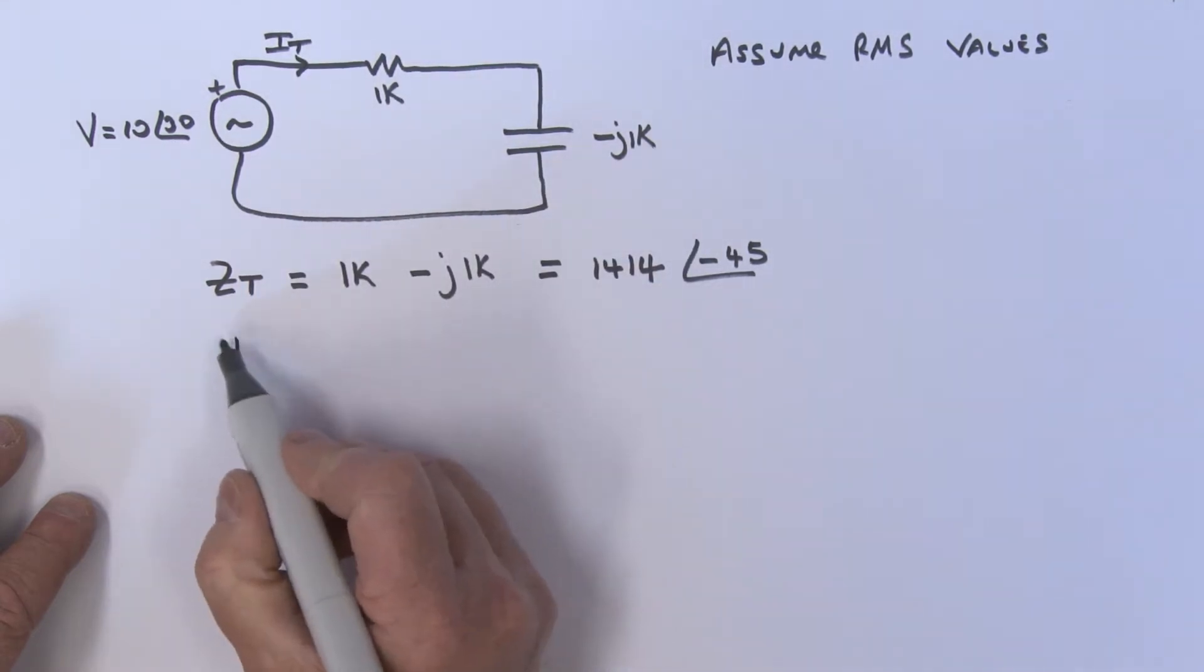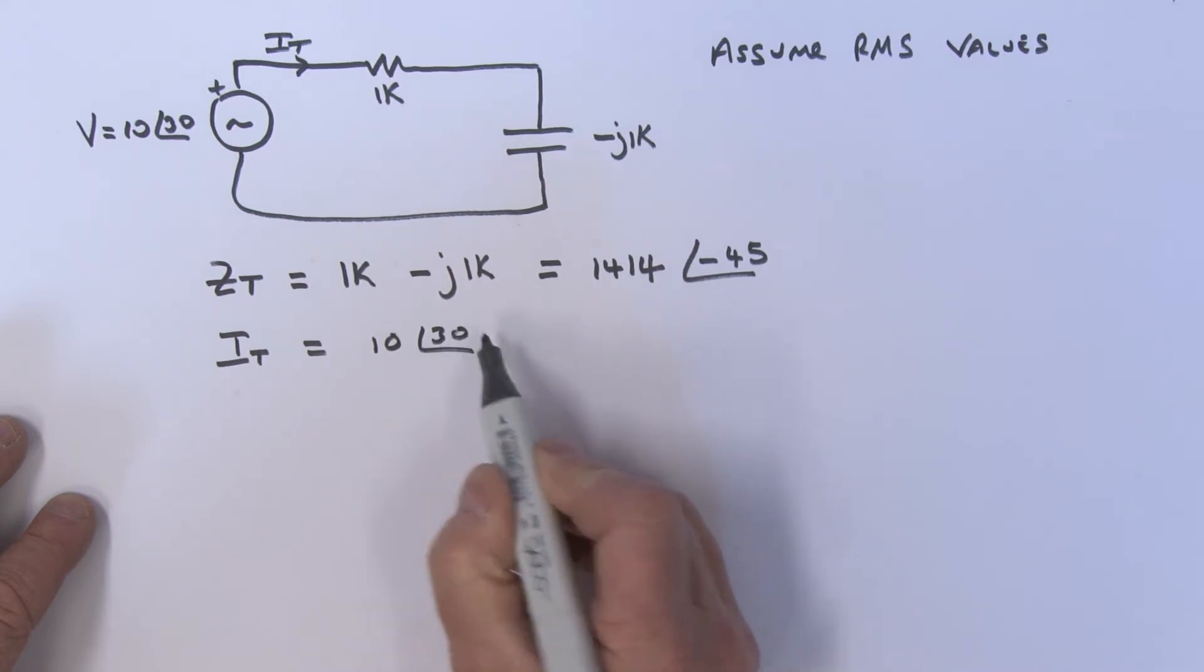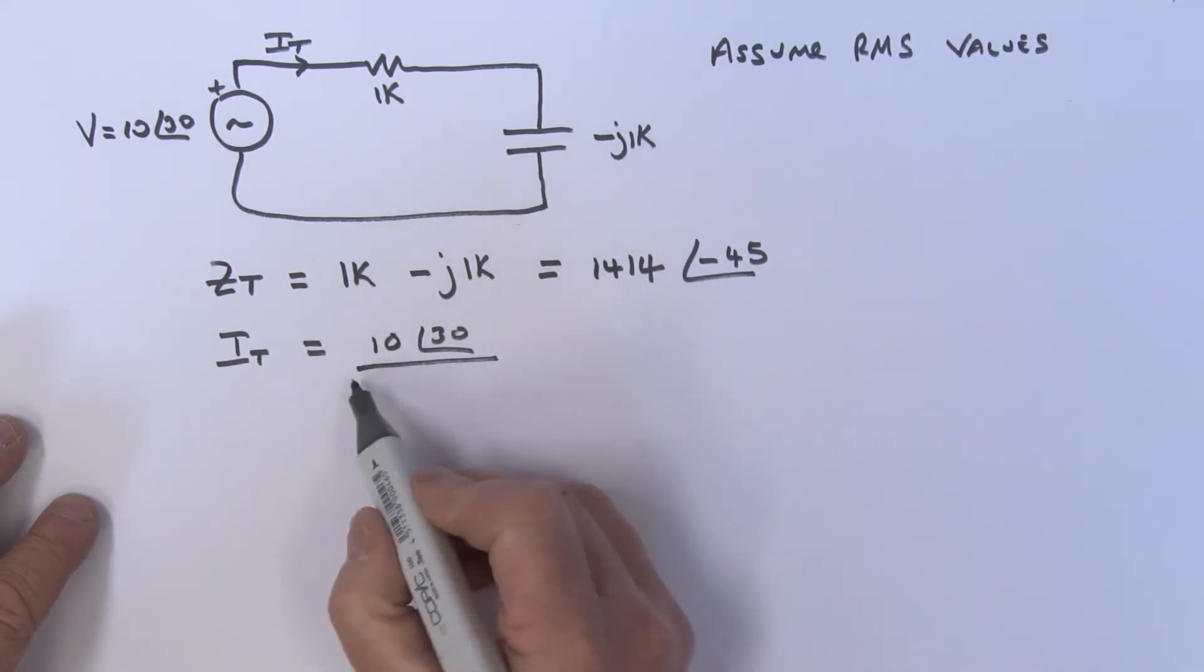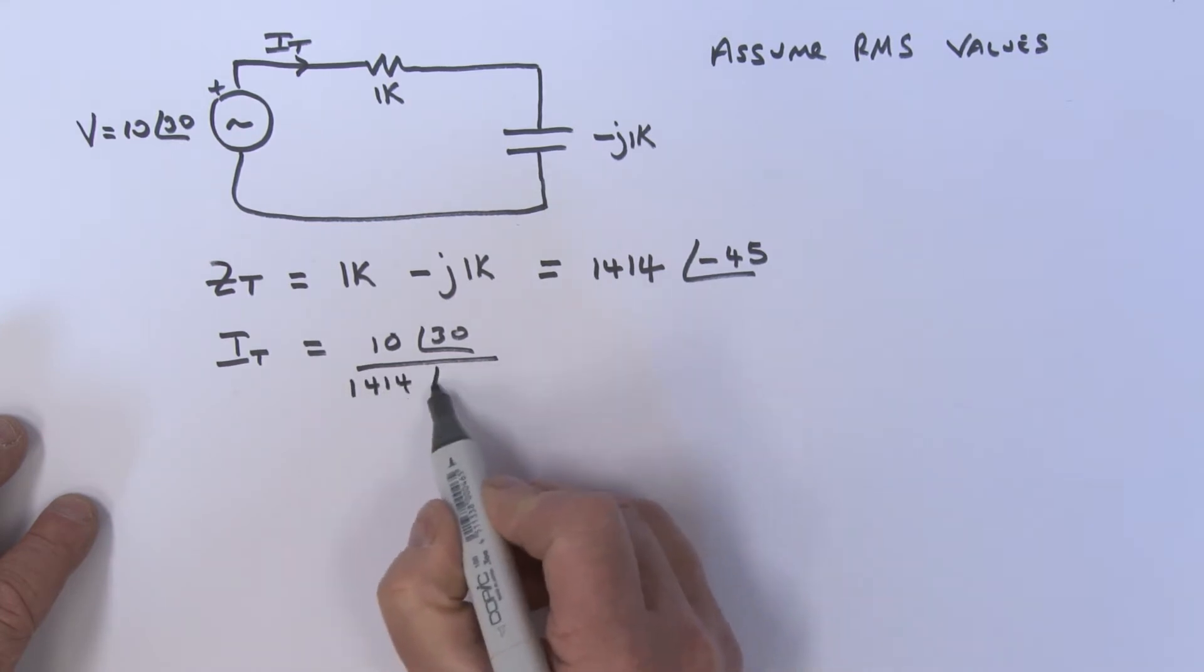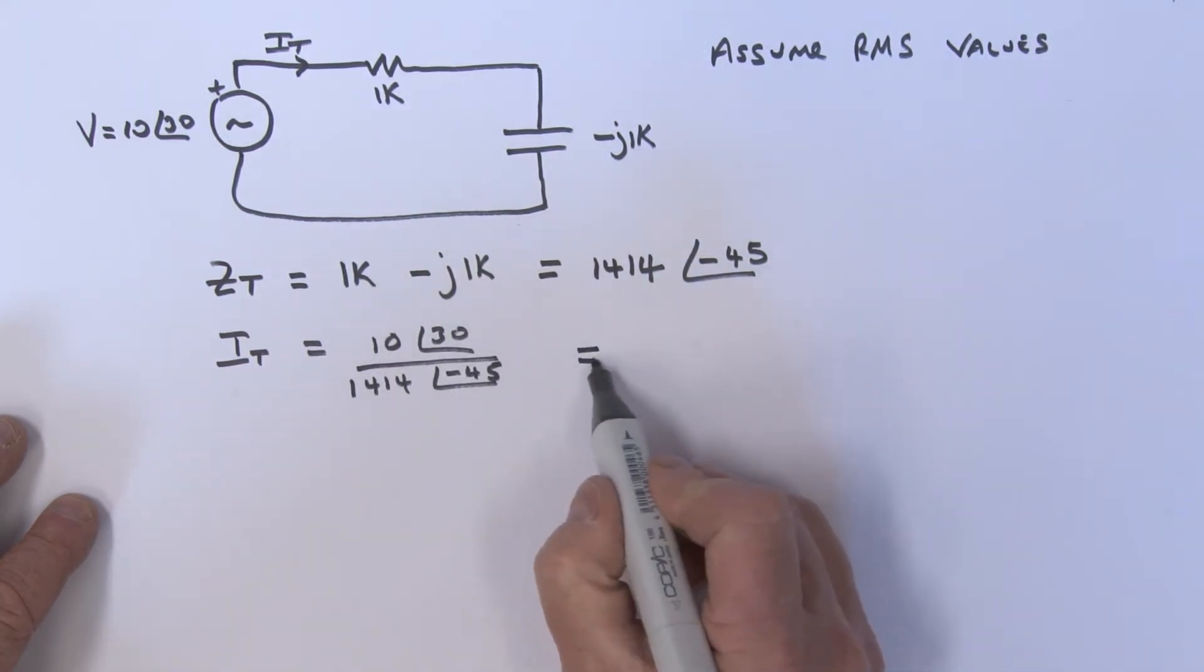IT is going to be equal to our voltage source over here, which is 10 at an angle of 30, and that's divided by the impedance in the circuit ZT, which is this 1414 at an angle of minus 45.